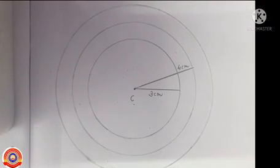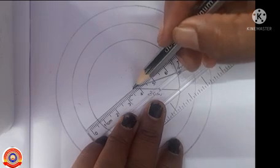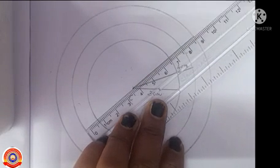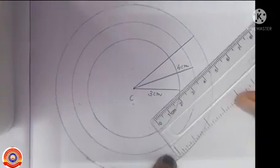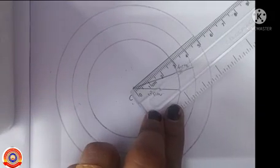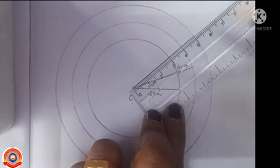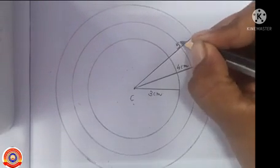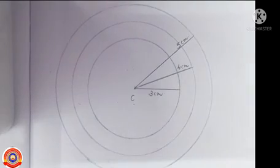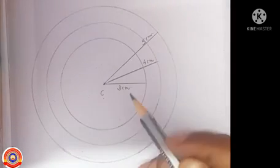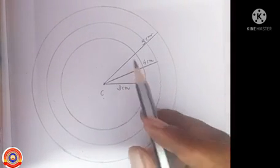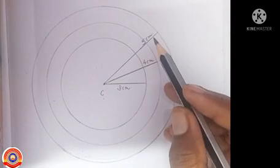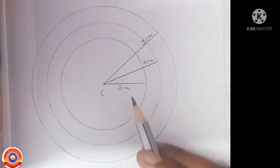We will get the circle. Mark its radius by using the ruler. Let's measure its length — what's the length of its radius? Yes, five centimeters. Here are the circles of radius three centimeters, four centimeters, and five centimeters. Children, did you understand this?